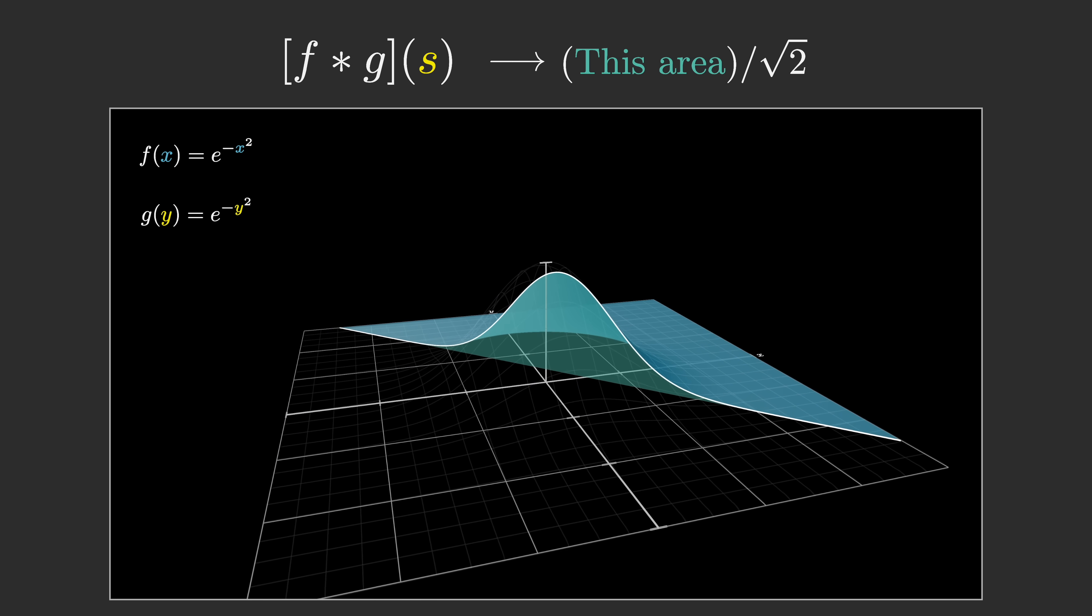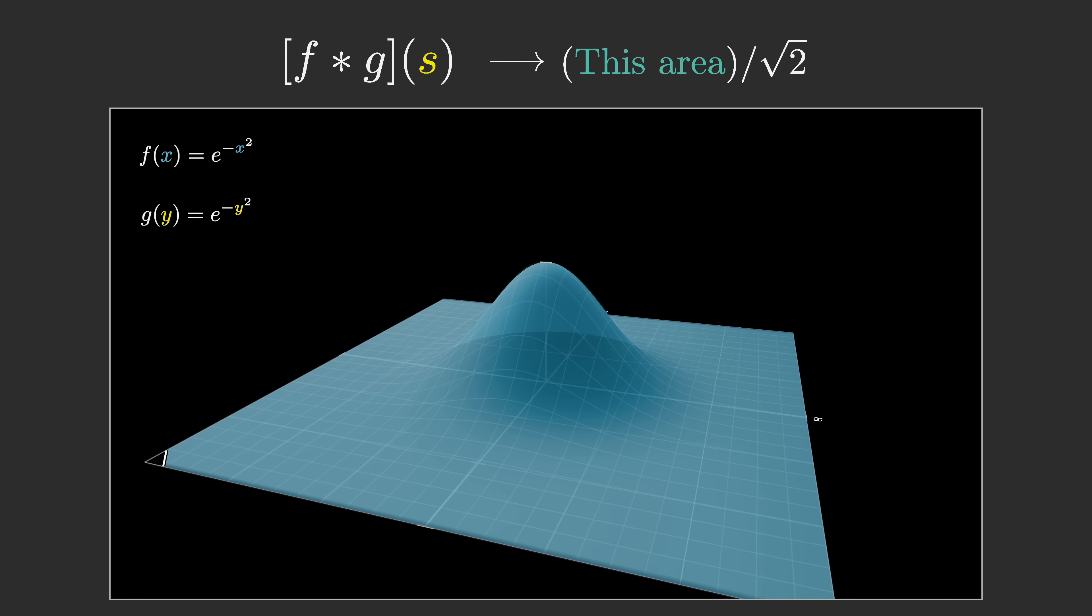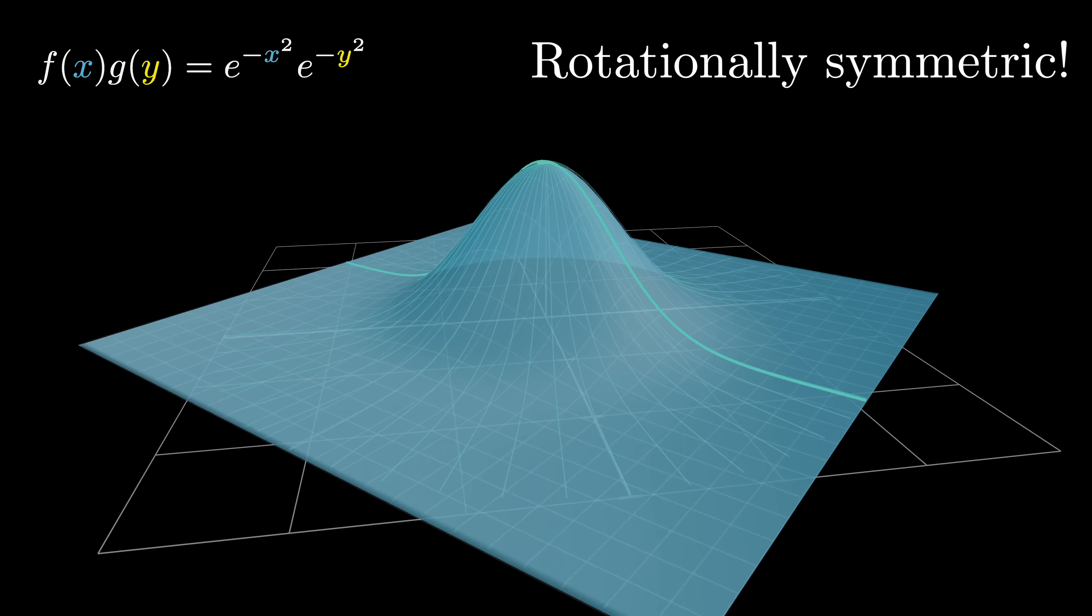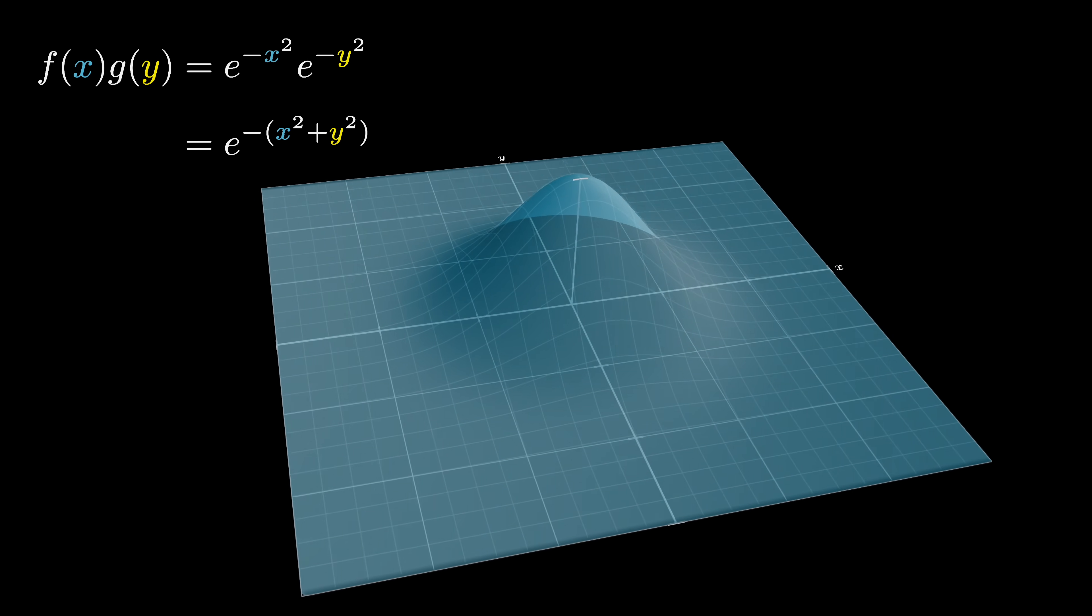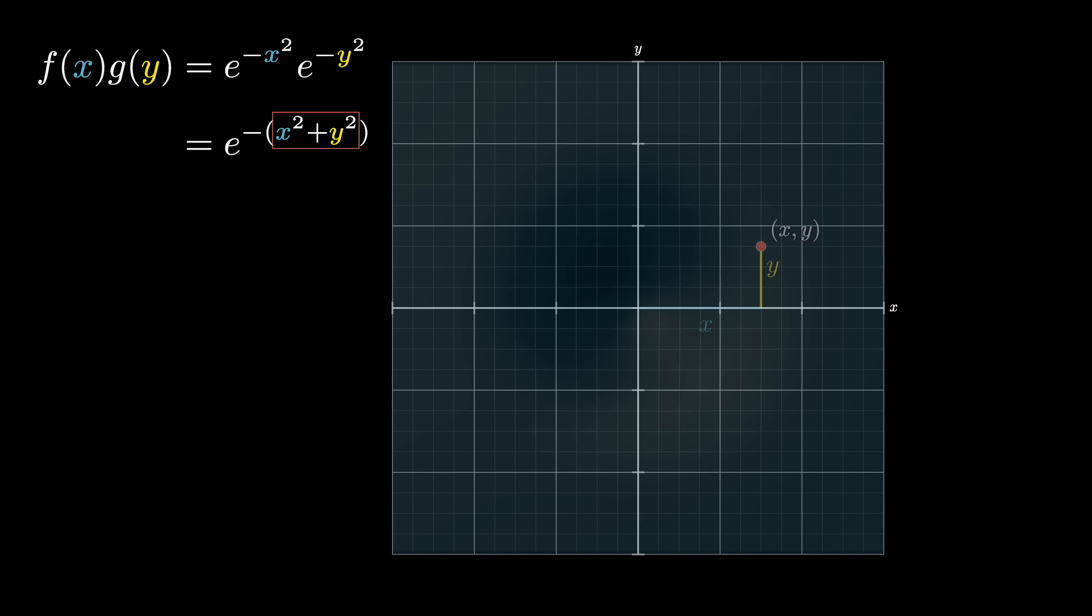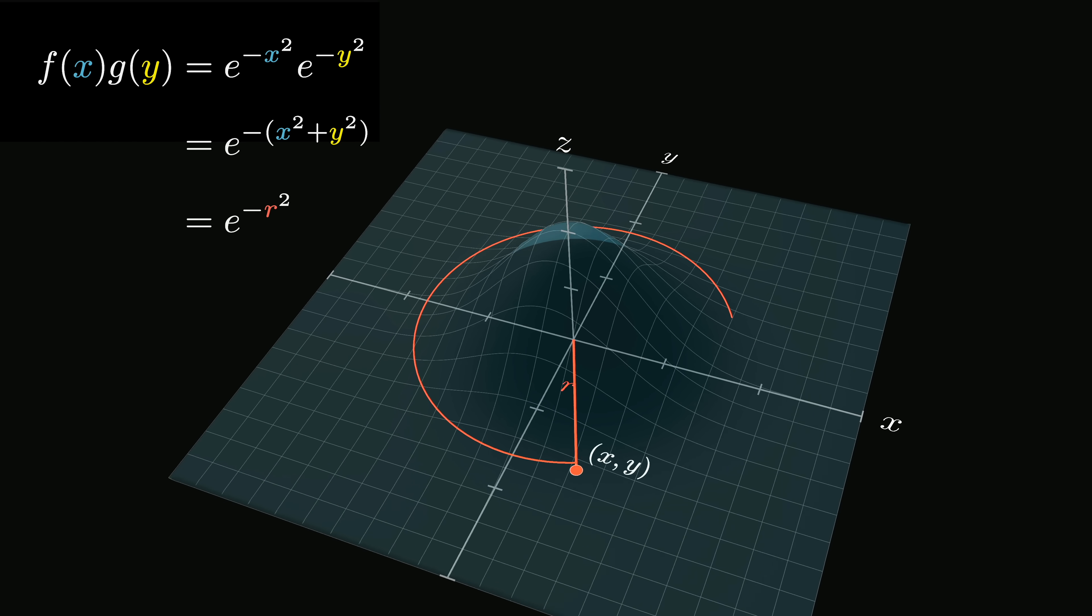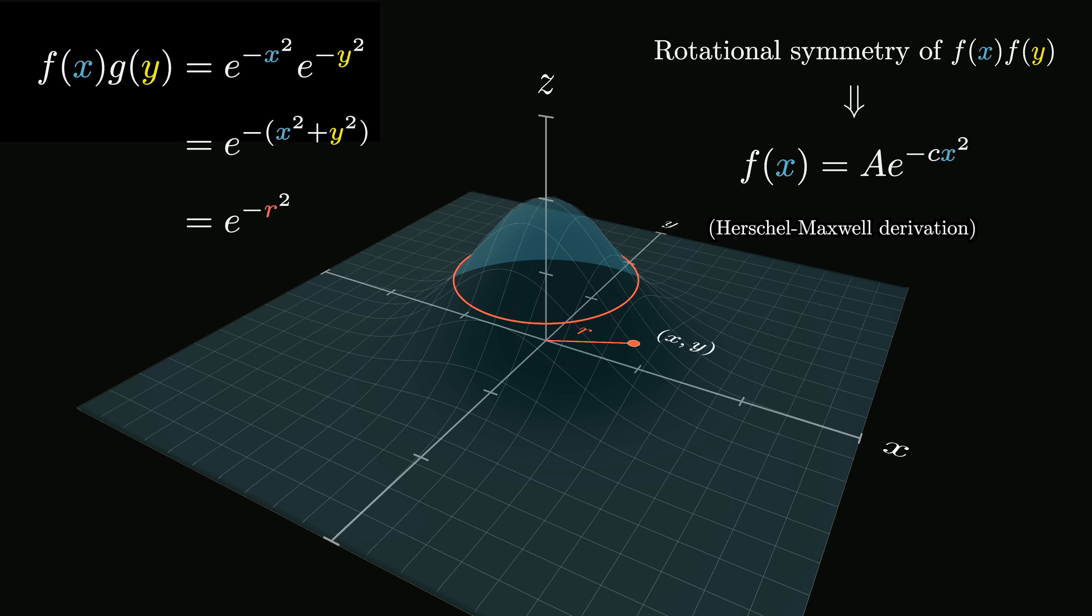In the specific case where these two functions look like e to the negative x squared and e to the negative y squared, the resulting 3D graph has a really nice property that you can exploit. It's rotationally symmetric. You can see this by combining the terms and noticing that it's entirely a function of x squared plus y squared, and this term describes the square of the distance between any point on the xy plane and the origin. So in other words, the expression is purely a function of the distance from the origin. And by the way, this would not be true for any other distribution. It's a property that uniquely characterizes bell curves.